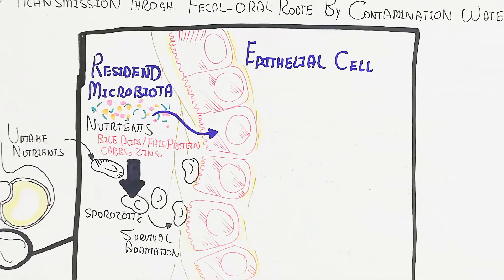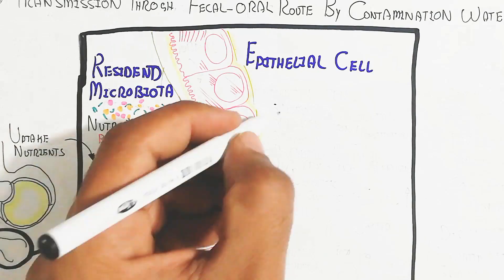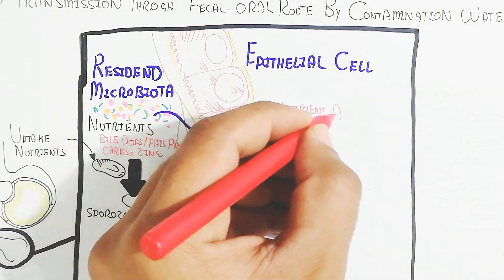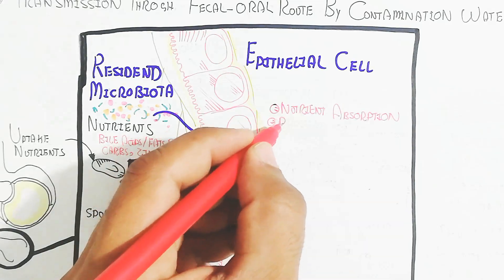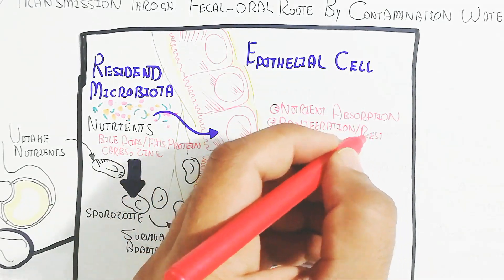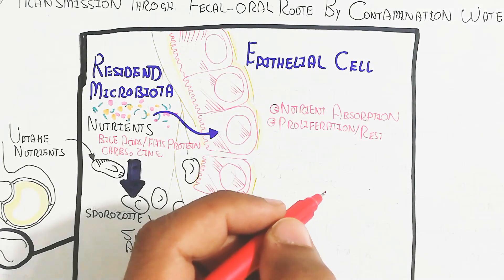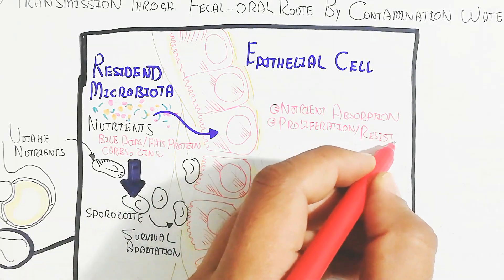This survival and adaptation will occur. Let's begin to understand nutrient absorption. Nutrient absorption, proliferation, and resistance occur due to the immune system barrier integrity enhancement.